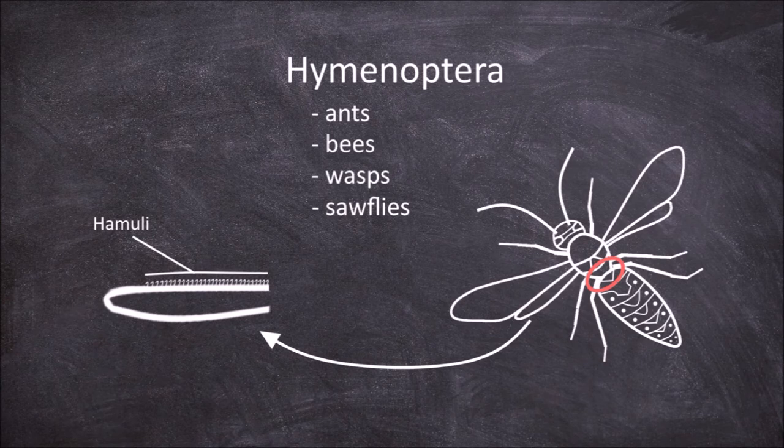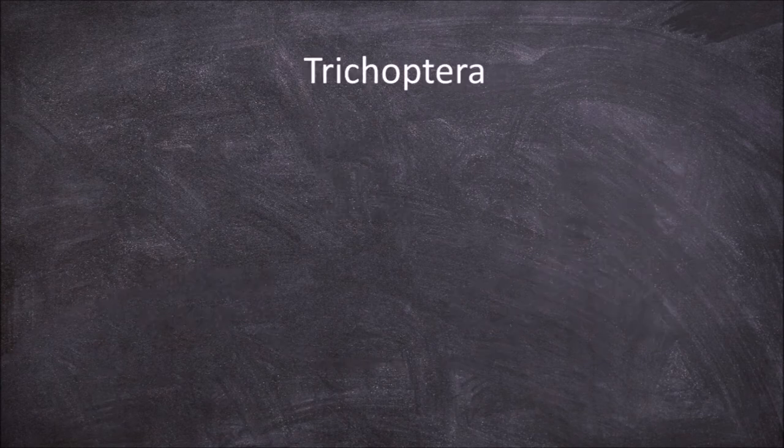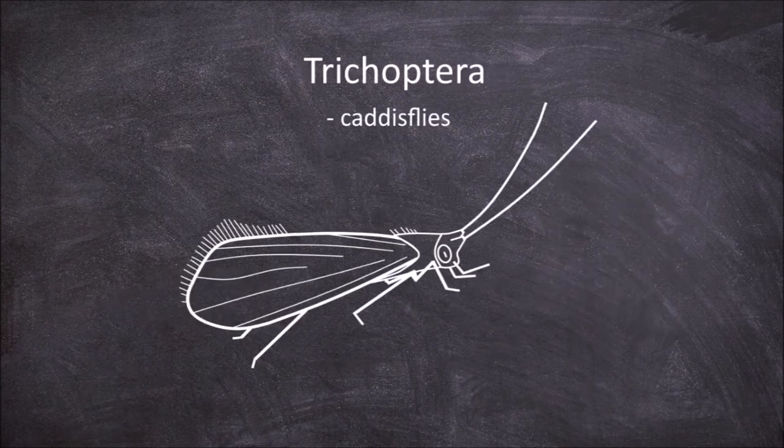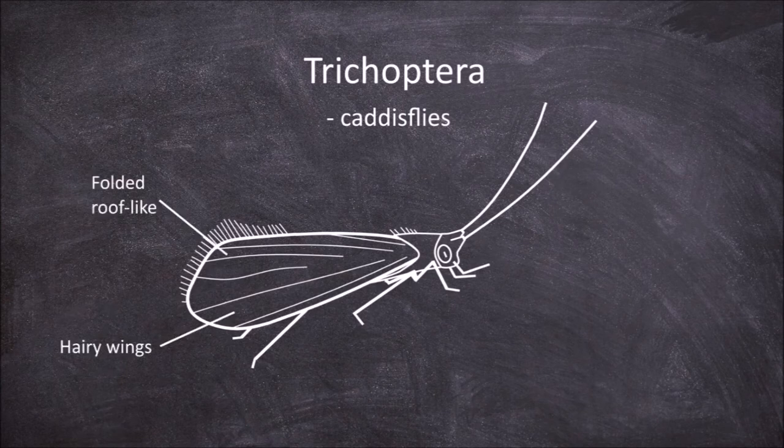The next order is the Trichoptera, which are the caddisflies. The characteristic feature of this order is the presence of hairy wings that are folded roof-like over their backs at rest.